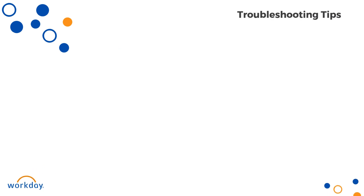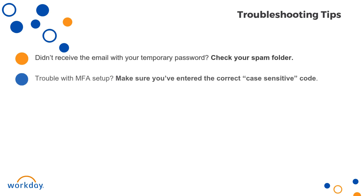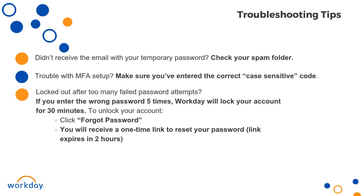If you encounter any issues during the login process, here are some quick tips. Didn't receive the email with your temporary password? Check your spam folder or contact HR operations. Trouble with MFA setup? Make sure you've entered the correct code. Locked out after too many failed login attempts? If you enter the wrong password five times, Workday will lock your account for a period of 30 minutes. To unlock your account, use the Forgot Password option and request a one-time use link to reset your password.